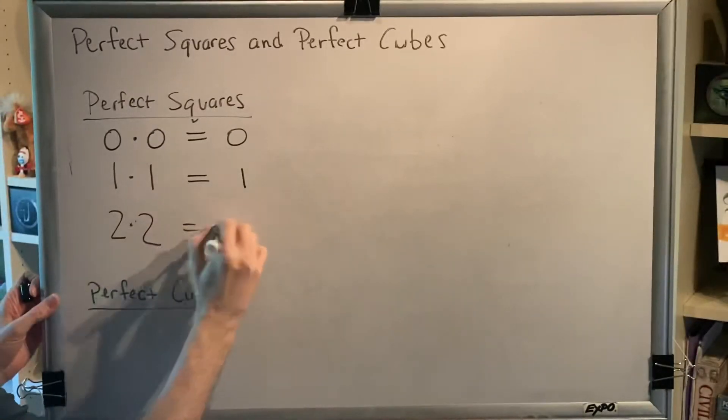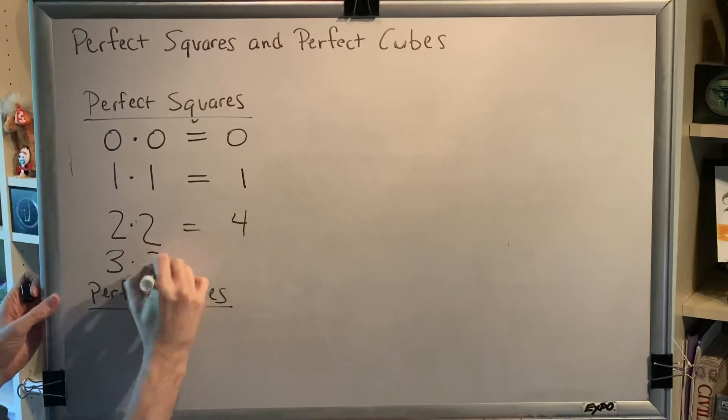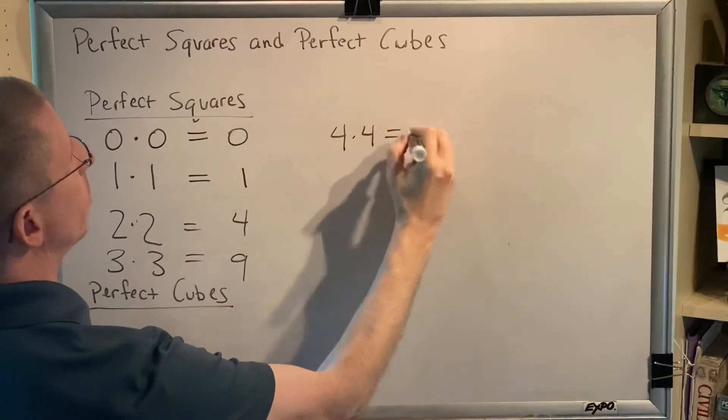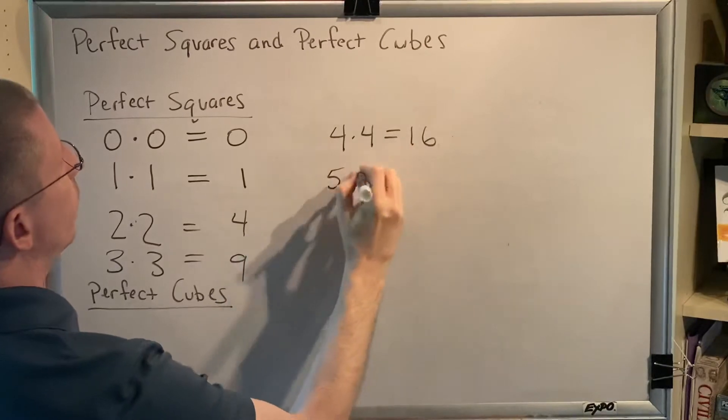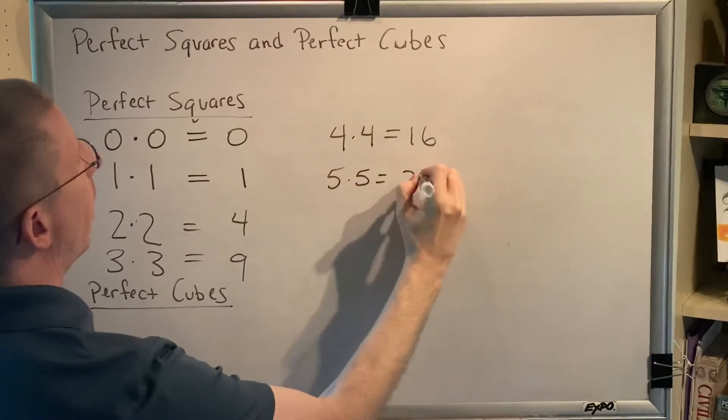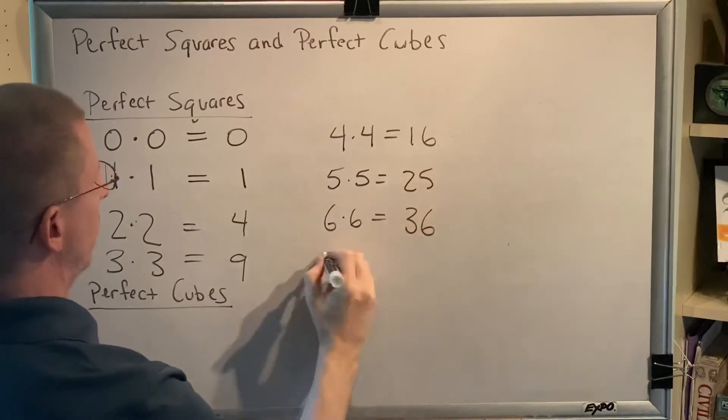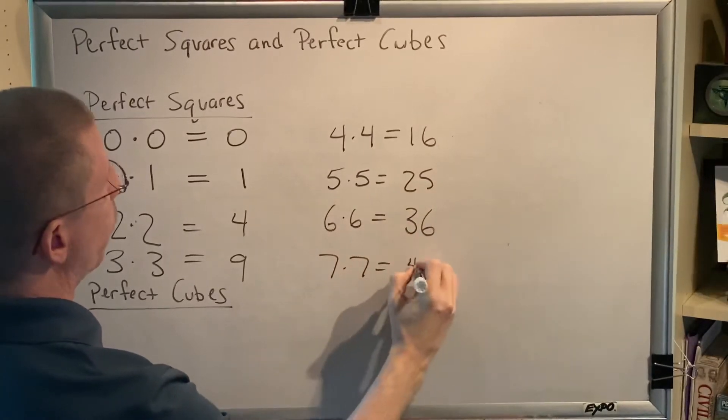Two times two equals four. Three times three equals nine. Four times four equals sixteen. Five times five equals twenty-five. Six times six equals thirty-six. Seven times seven equals forty-nine.